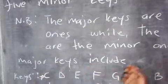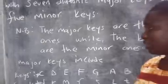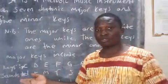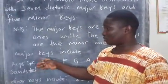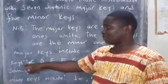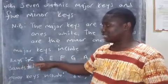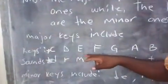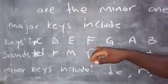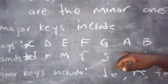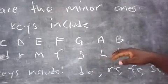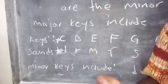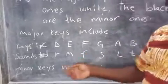So the major keys include — when we talk of keys in music, we have key C, D, E, F, G, A, and B. These letters are keys in music. They are the musical keys, and each letter corresponds with a given sound of music.